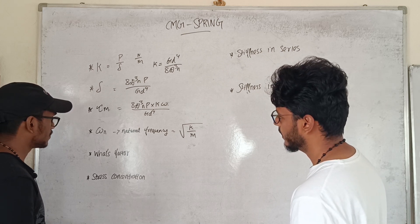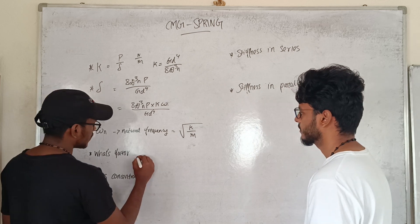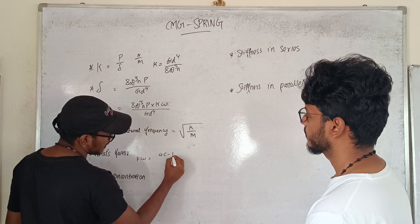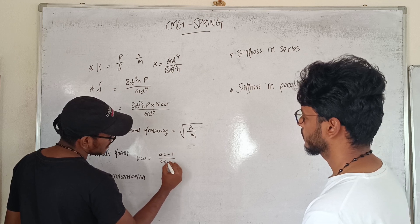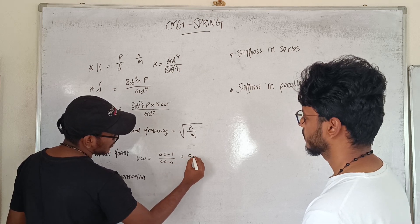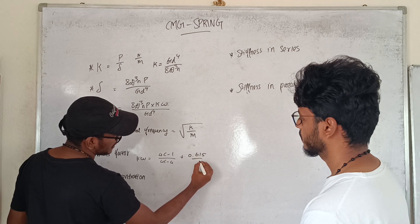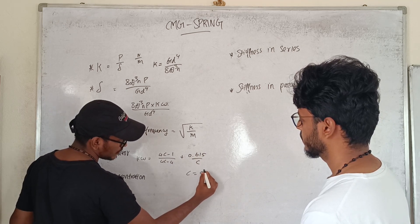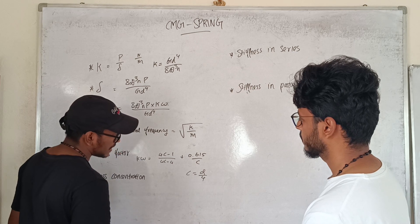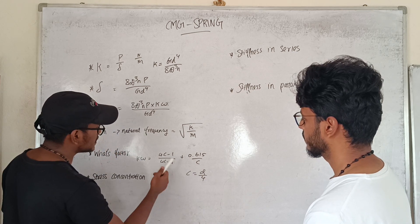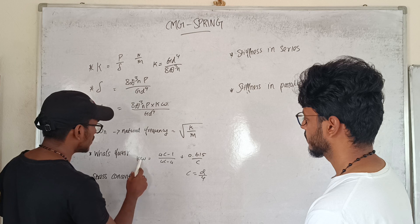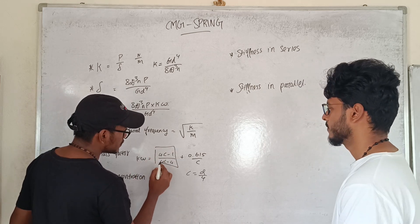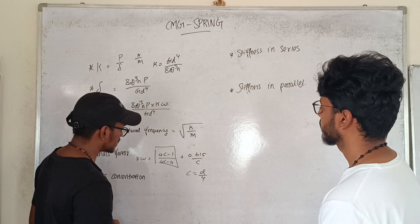K is the Wahl's factor. Wahl's factor KW equals (4C minus 1) divided by (4C minus 4), plus 0.615 divided by C. Here C is equal to the mean coil diameter D divided by the wire diameter d.